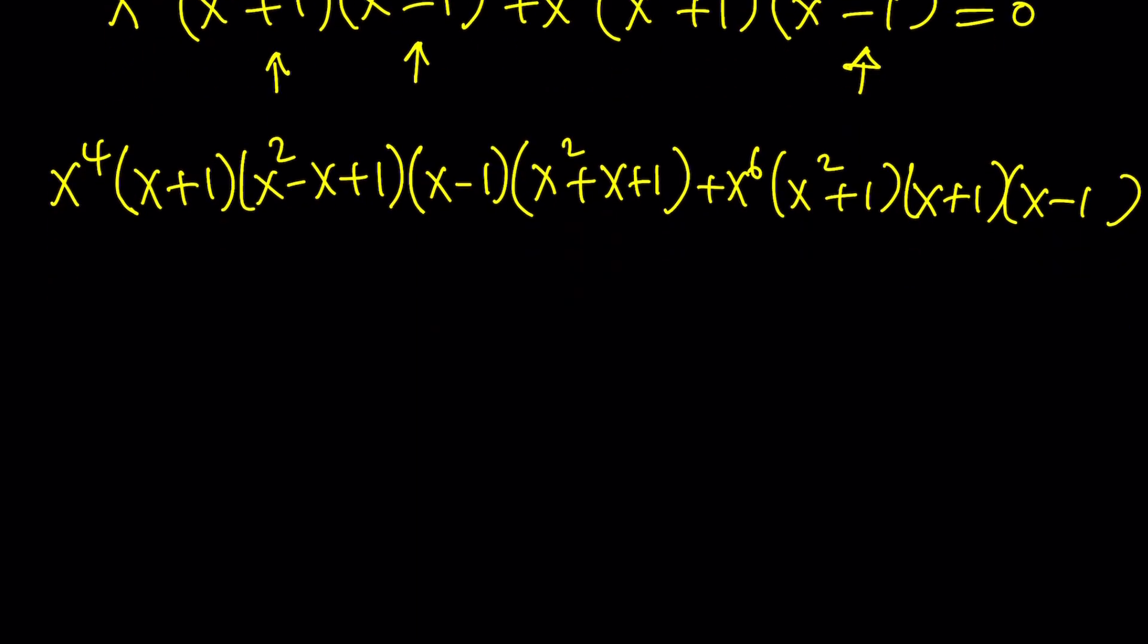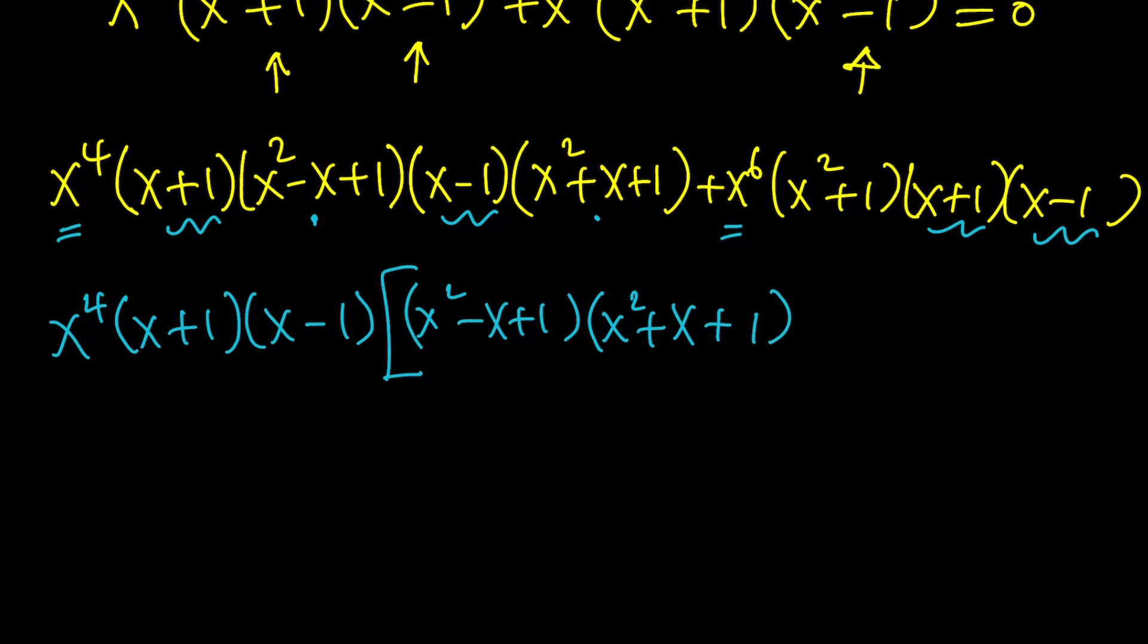So let's go ahead and factor sum of two cubes. x cubed plus 1 into x plus 1 times x squared minus x plus 1. And then x cubed minus 1 can be written as x minus 1 times x squared plus x plus 1. And x squared minus 1 can be written as x plus 1, x minus 1. And then the whole thing is equal to 0. Now, let's go ahead and find out what the common factors are. I do see an x to the 4th, and of course, x to the 6th contains that. And then we do see x plus 1, x plus 1, x minus 1, x minus 1. So those are the common factors.